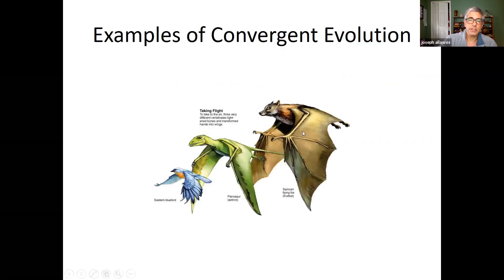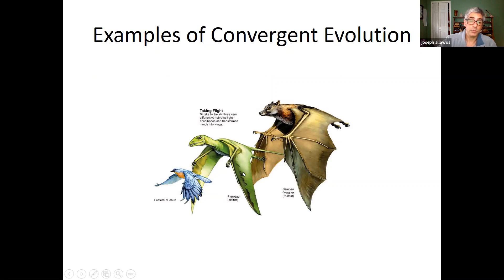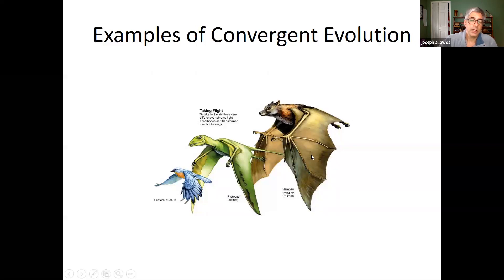Here's another example: a flying fox (a fruit bat), an eastern bluebird, and a pterosaur — an extinct dinosaur. Again, we have a mammal, a bird, and depending on who you ask, a reptile or a bird, and you can see the analogous structures. So that's convergent evolution.